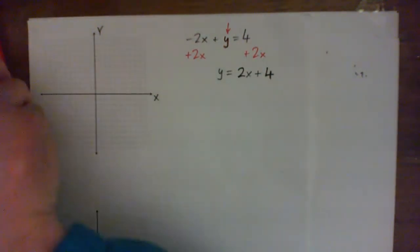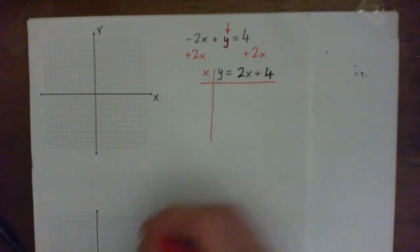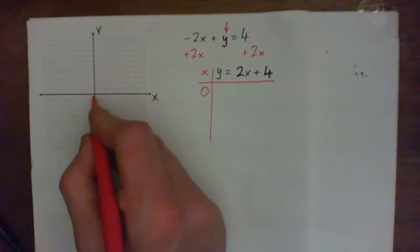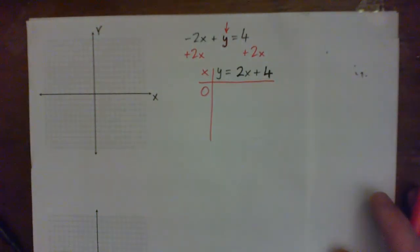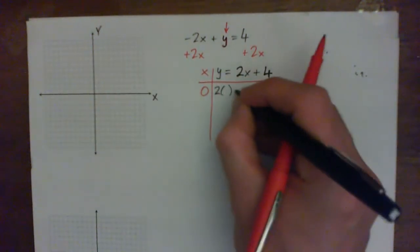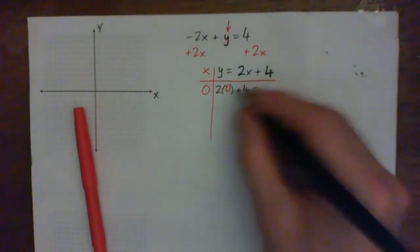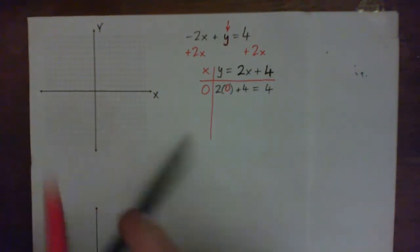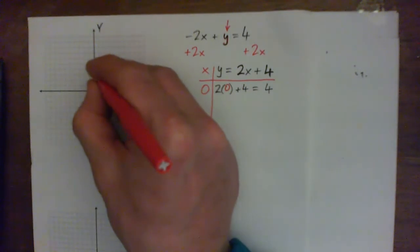So now I'm just going to do a little xy table. I'm going to plug in some points, and you can plug in anything you want, but always plug in 0 because it's real handy, and that's actually the y-intercept. So if I plug 0 in for x, we get 2 times 0 plus 4, which is 4. So the point (0, 4) should be here.